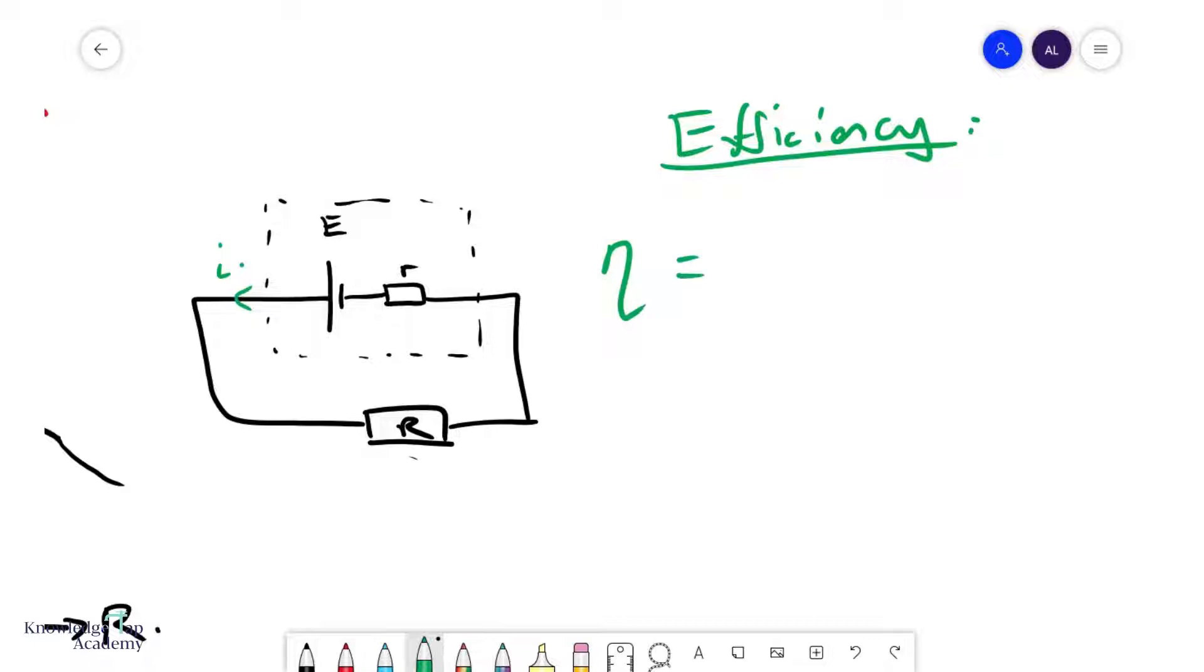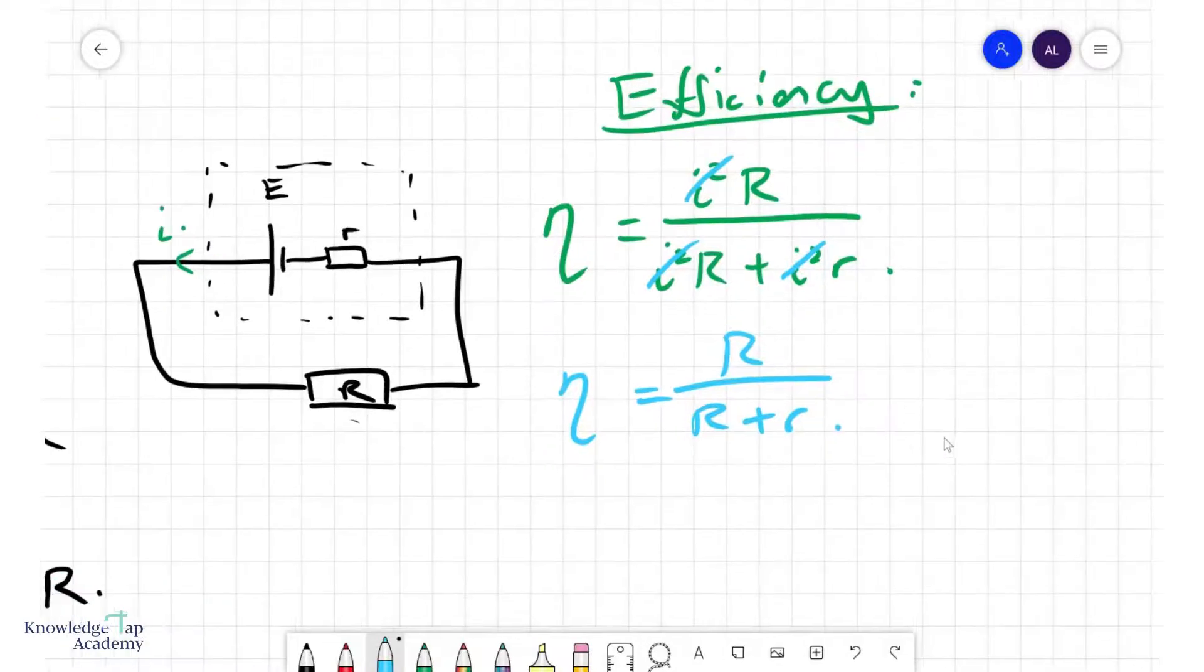Assuming that the useful output is how much power you can get in your external resistor, that will be I² times R. The total power consumed is I²R plus I²r. Cancel away all the I², and you get a nice expression for the efficiency: η = R/(R+r). In the case where we have maximum power, where R equals r,